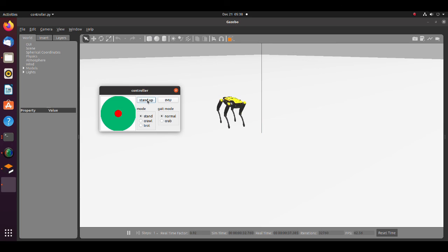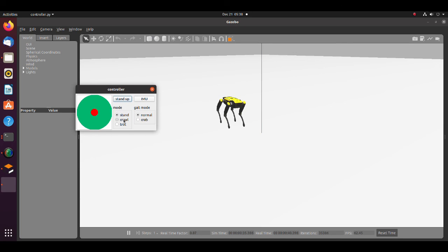To run joypad emulator app, execute controller py file. Note, to change walking mode, you have to set stand mode once and after that select a new walking mode.